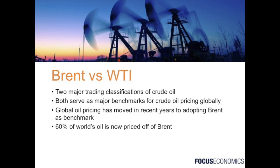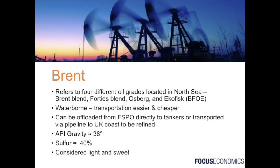Before getting into their importance to commodity trading and the futures market, let's look at the differences between the two. Brent crude oil originally referred to oil extracted from the Brent oil fields located in the North Sea off the coast of the UK. However, for various reasons related to commodity trading and the futures market, Brent now refers to four different crude oil grades extracted from various wells in the North Sea. These four grades are Brent Blend, Forties Blend, Oseberg, and Ekofisk.